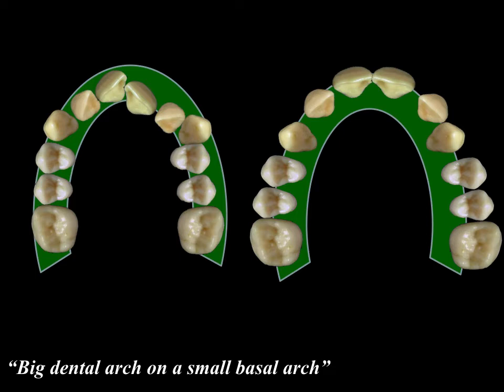If expansion is chosen in a class 1 skeletal base, the dentition comes too far buccal and labial, outside the alveolar bone. Teeth are stable and have adequate blood supply only when within the spongiosa at the center of the alveolar bone. If they hit the cortex outside the bone, there is no blood supply. Additionally, teeth placed closer to the cheek and lip muscles are prone to being collapsed by those forces, causing arch contraction and relapse of the treatment.